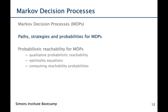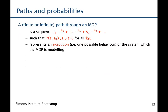Let's now go on to paths, strategies, and probabilities for MDPs. A path through an MDP is a sequence: a state, we perform some action, and then we move to some new state. We require that if we're in state Si and choose action Ai, we must move to state Si+1 with probability greater than zero for all i. So each of these transitions happens with non-zero probability, and a path represents a possible execution or one possible behavior of the system the MDP is modeling.